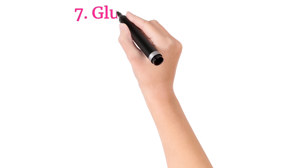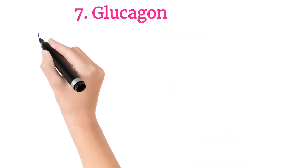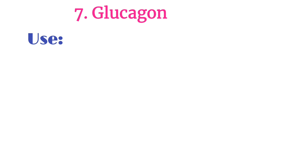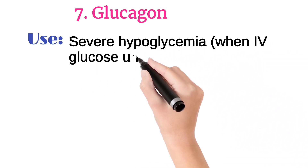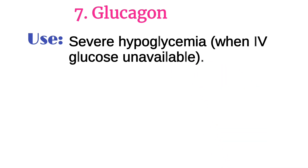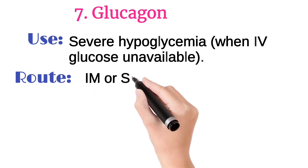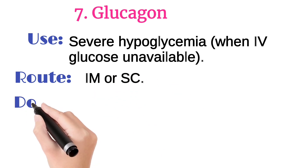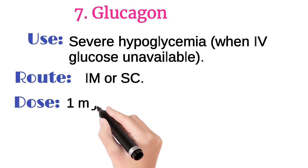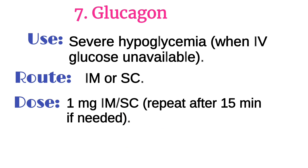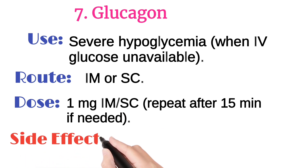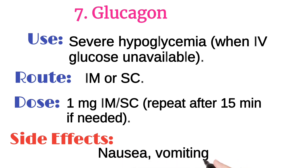The next one is glucagon. It is used in severe hypoglycemia when IV glucose is not available. It is injected intramuscularly or subcutaneously. Its usual dose is 1 mg IM or SC, and may be repeated after 15 minutes. It may cause nausea, vomiting, and headache.